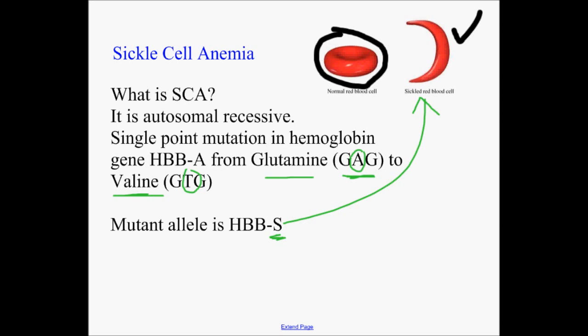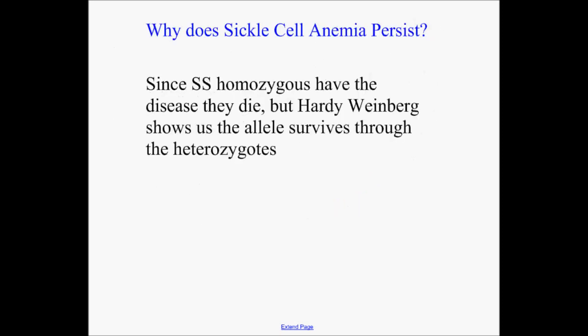Why does this fit into Hardy-Weinberg? If this is such a terrible disease and these people die from it, why doesn't this allele get weeded out over time? SS — the recessive homozygous — those people get sickle cell anemia and die. But the Hardy-Weinberg equation shows us that the allele can still survive in the heterozygote AS. That person doesn't really get sickle cell anemia, so that allele survives there even though the homozygous individuals are getting weeded out. Hardy-Weinberg says that the frequency in the next generation will pop out again and form more recessive homozygotes, even though most of them died last time.